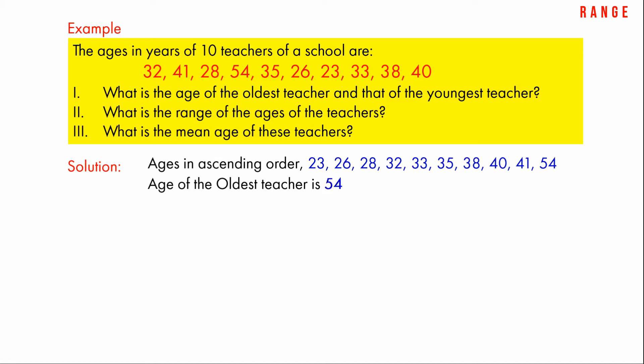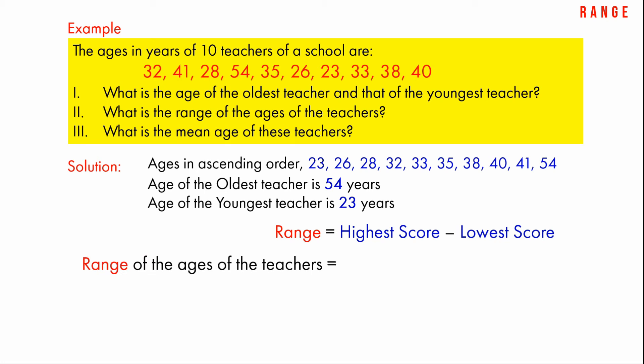Age of the oldest teacher is 54 years and age of the youngest teacher is 23 years. We know that range is equal to highest score minus lowest score, so here range of the ages of the teachers is equal to 54 minus 23 years.